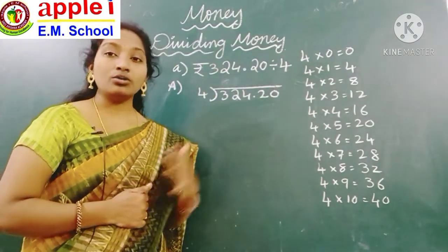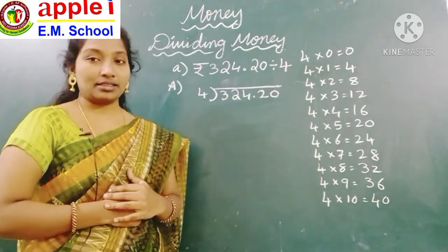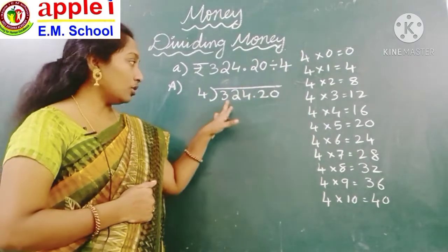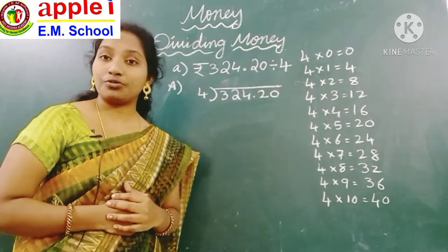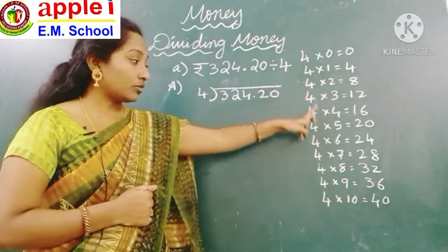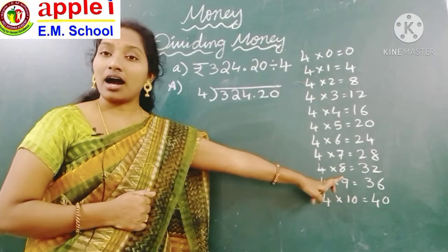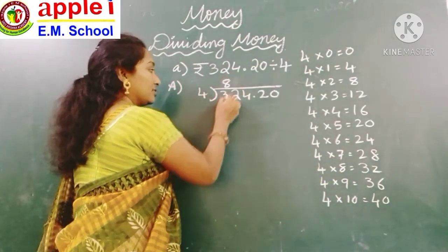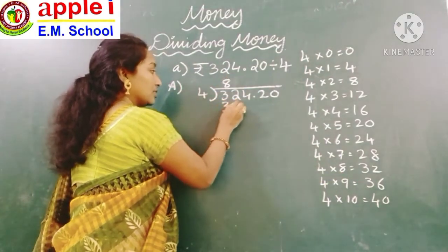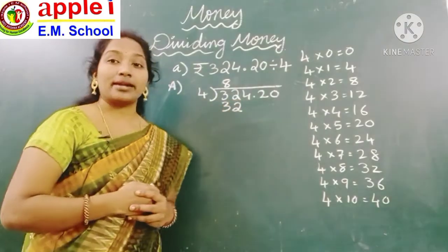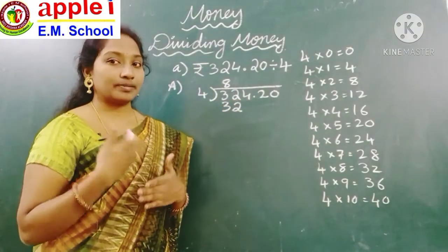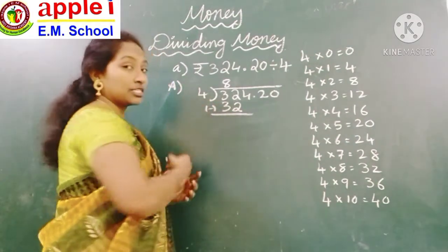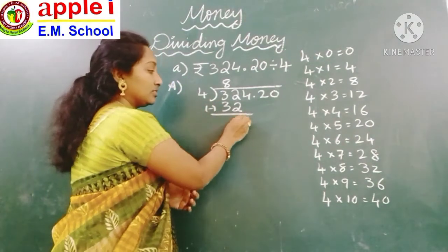Now check in the table. The second step is to check in the table. When you read 32 in the 4 times table — 4 eights are 32. And the next step is subtract. Do the subtraction: 32 minus 32 is 0.